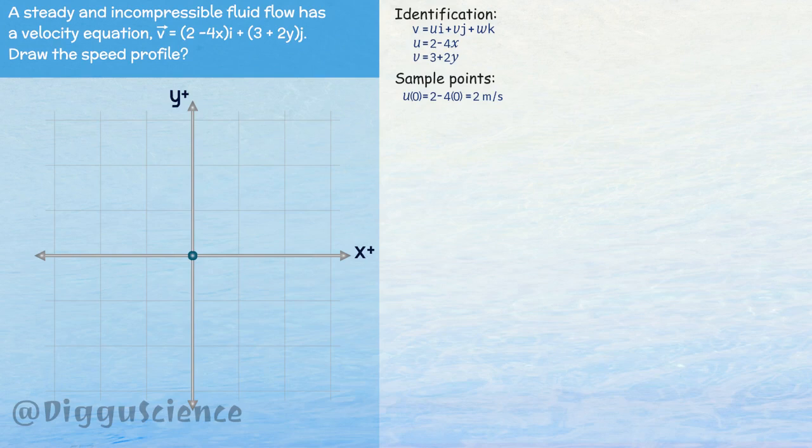The value of the velocity component on the y-axis v of 0 is equal to 3 plus 2 times 0. This value is equal to 3 meters per second.